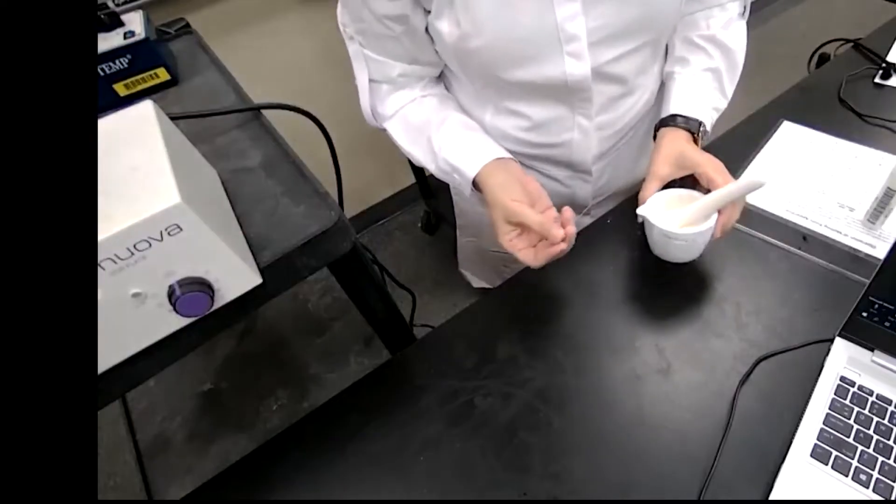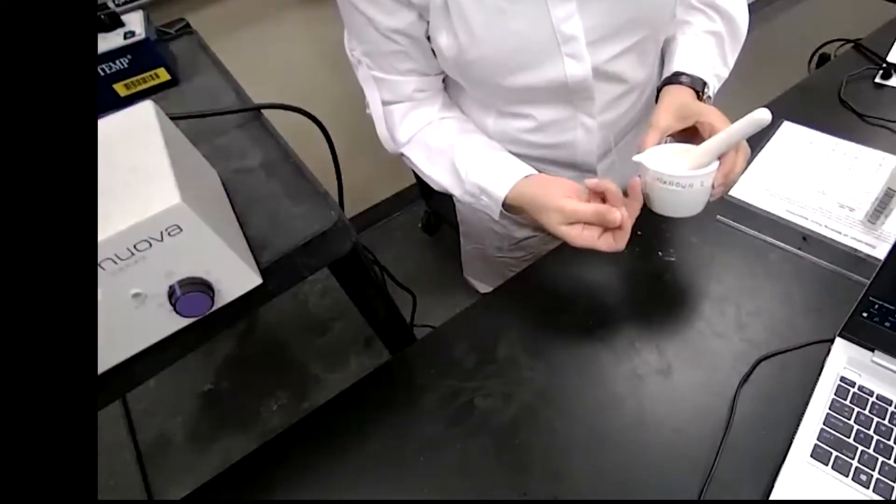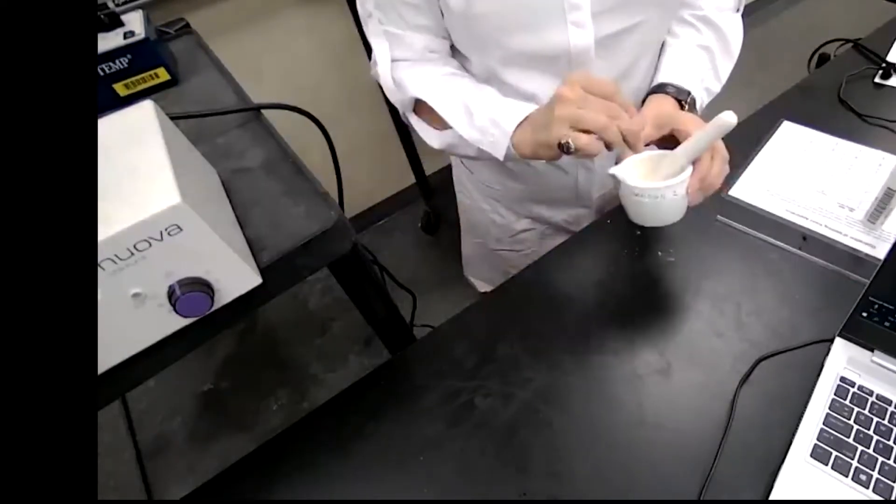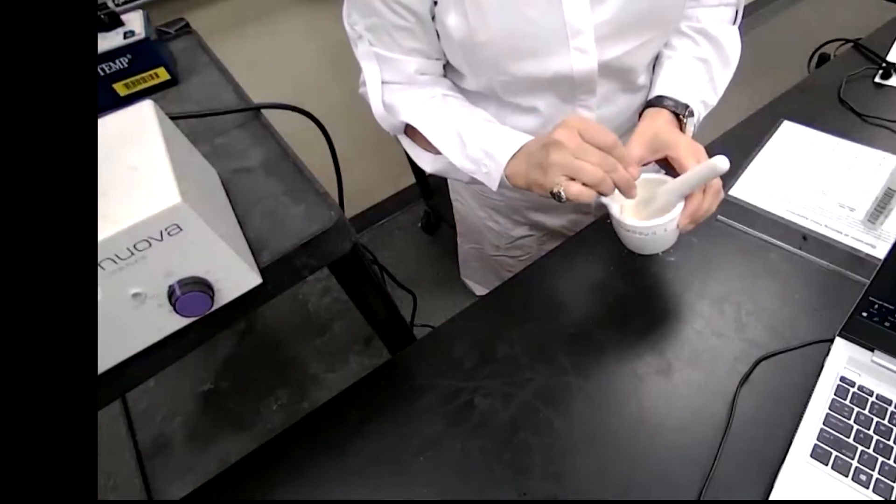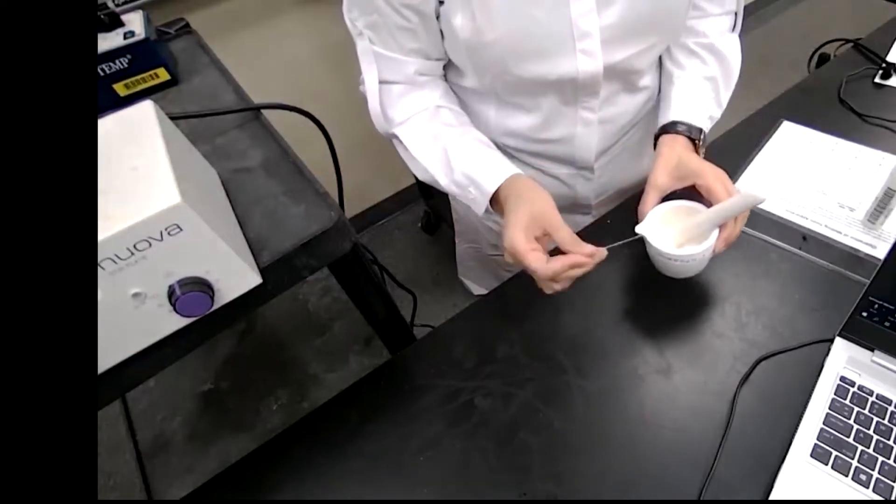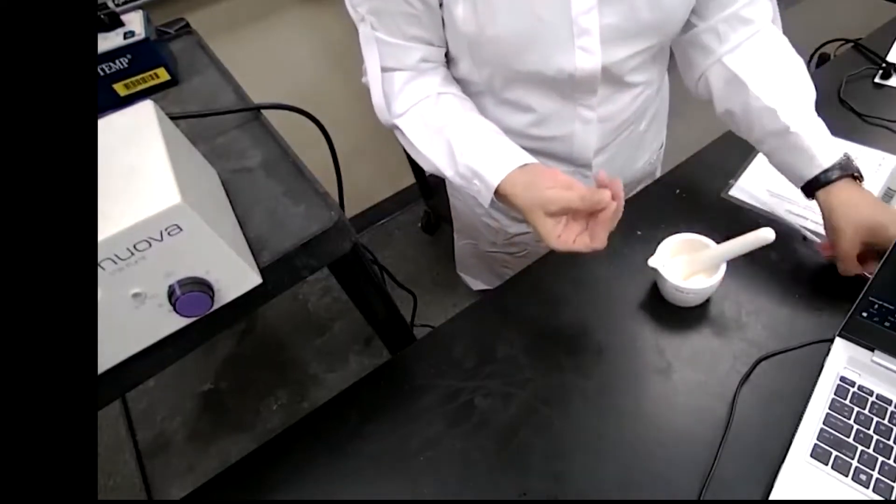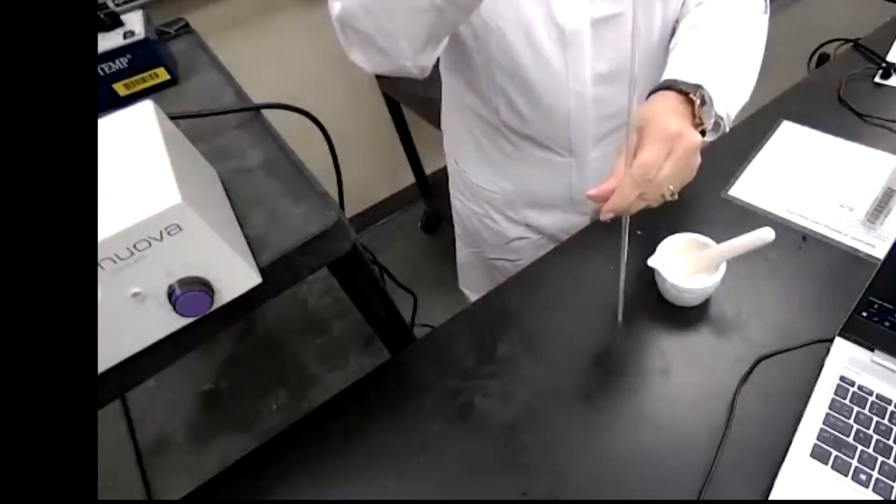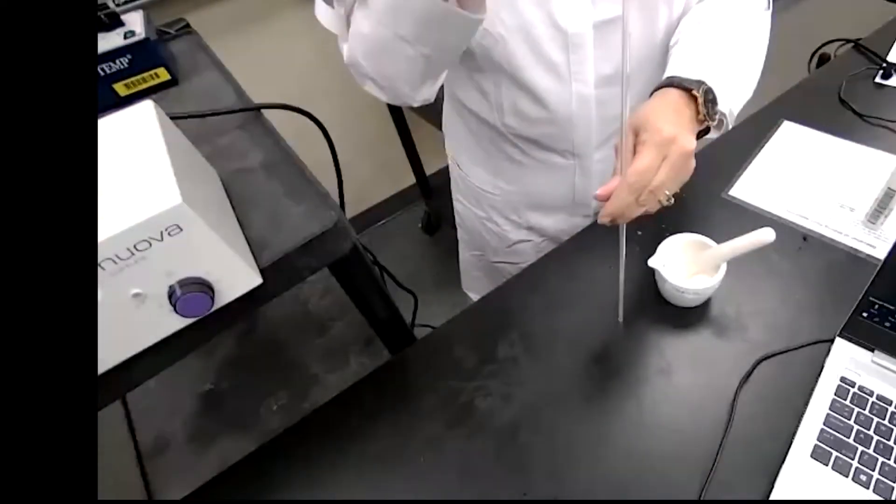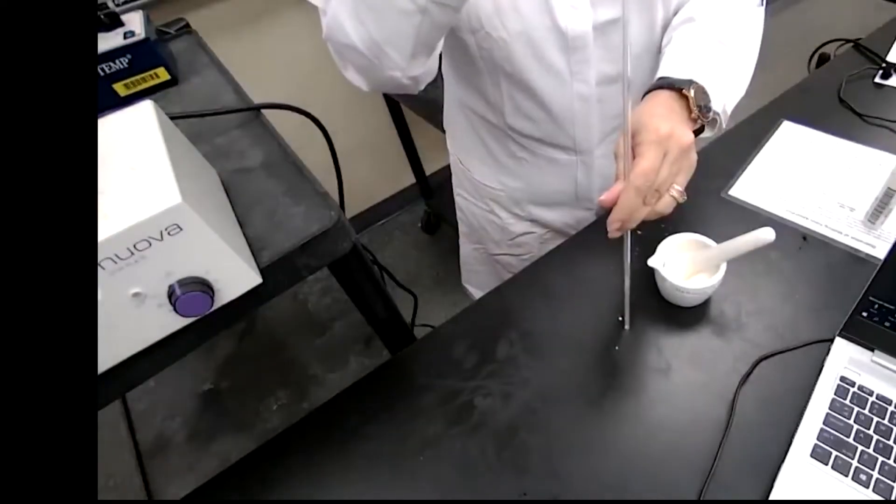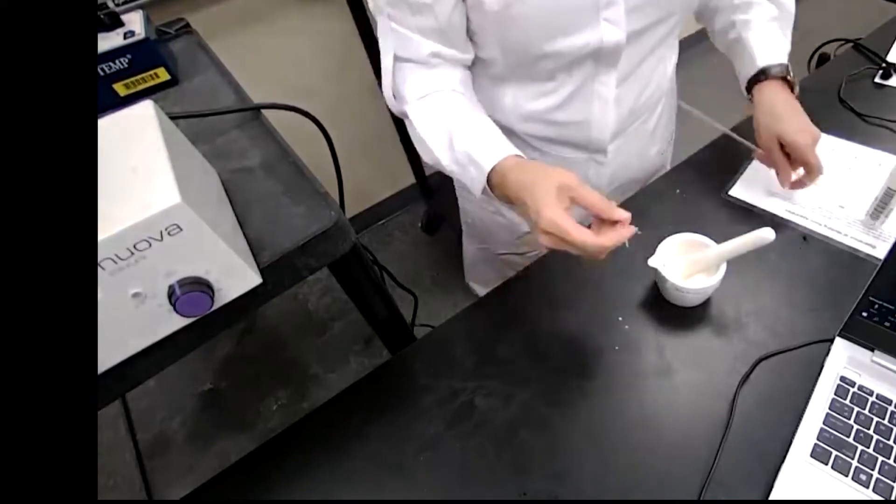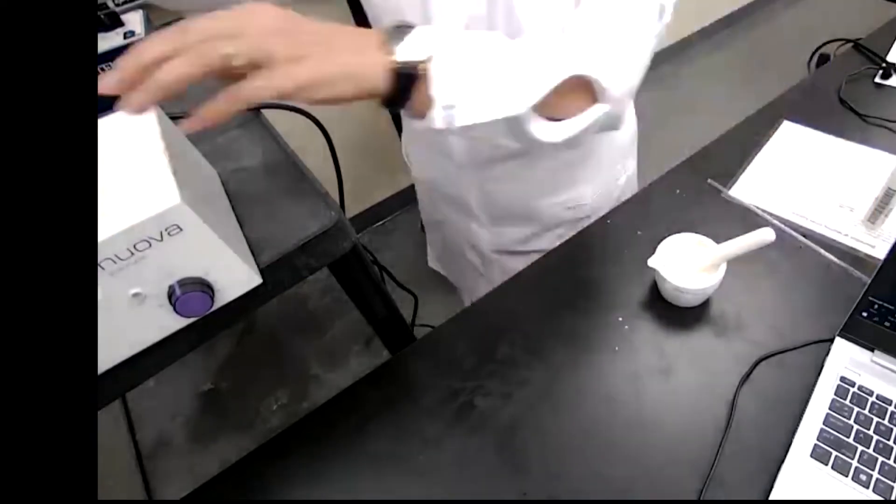We have our unknown number two now. And again, because it's unknown, we don't know the approximate melting point. I'm going to do a quick sample to get the approximate melting point for this sample first. Then I would do a second sample to get the real melting point of the unknown.